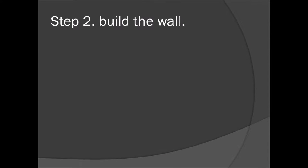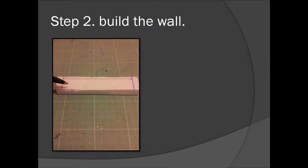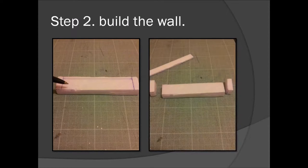Step two: build the wall. Start drawing on the cut out polystyrene piece like this. And cut it out like this. I made the side parts of the wall about one centimeter long before cutting them out.